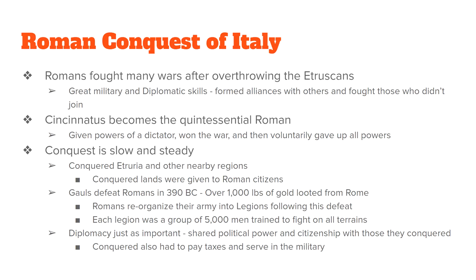Cincinnatus basically said no — he had just done his duty for his people — and voluntarily gave up all of his powers, saying he did it for the greater good and to help the people. This act of selflessness became the ideal image that all Romans were supposed to live up to.